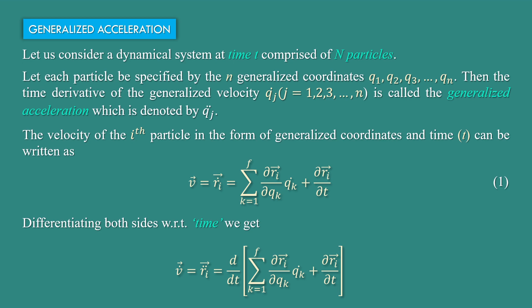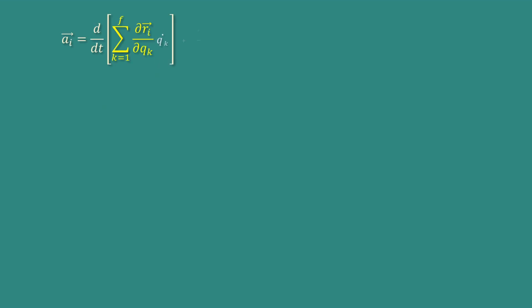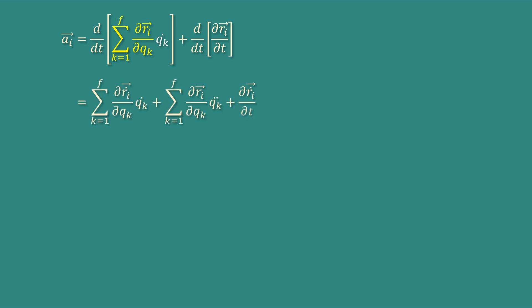Now v dot can be written in terms of acceleration as ai, which implies ai equal to d/dt of summation k goes from 1 to f of (del ri by del qk) into qk dot, plus d/dt of (del ri by del t), which equals summation k of (del ri dot by del qk) into qk dot, plus summation k of (del ri by del qk) into qk double dot. Here the first term is del ri by del qk and the second term is qk dot.